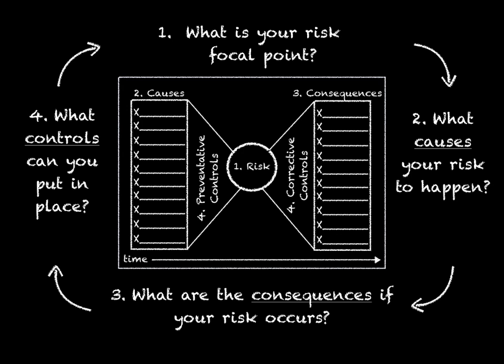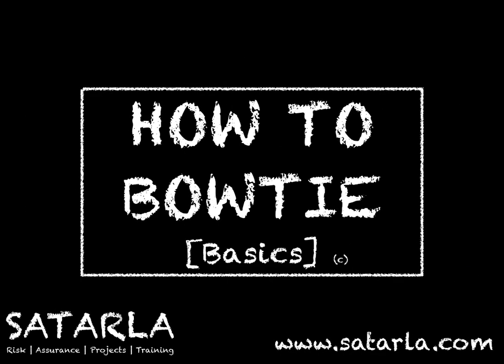It should only take about 30 minutes to work through the first cycle of your four steps. Bowties can be very powerful facilitation tools, especially when working with large groups of people to understand complex risk and how it might impact on their organisation. It can also act as a decision-making tool. There are many ways to expand on your risk bowtie — for an explanation of these, please visit the more advanced How to Risk Bowtie videos.